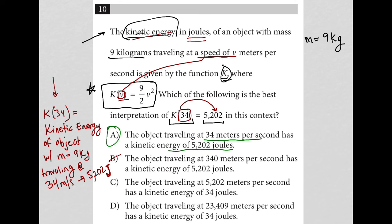Choice C, the object traveling at 5,202 meters per second. That's not true. And choice D, the object traveling at 23,409. Not sure where that number came from. That's also not true. So I've confirmed that A is the best answer here.